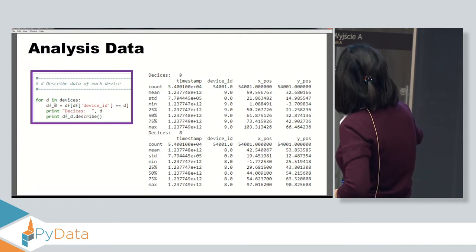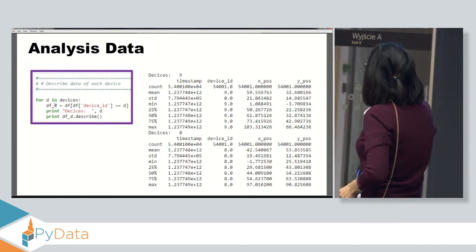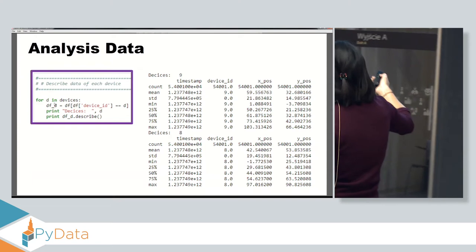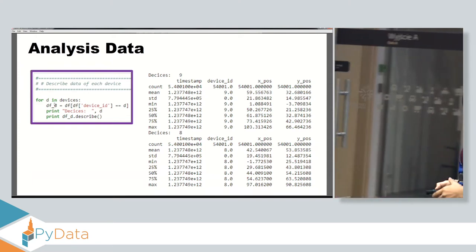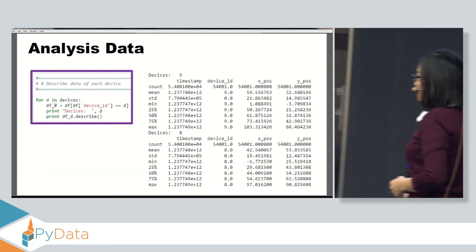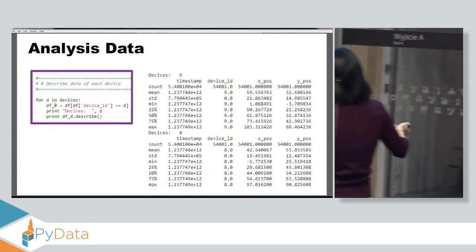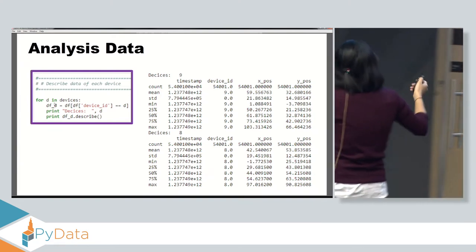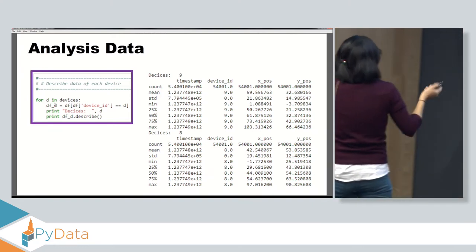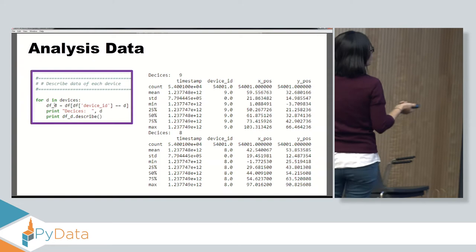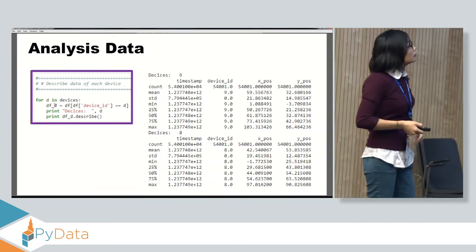We can also use DataFrame.describe() to get more statistical information about the data, including count, mean, standard deviation, min, max, and percentiles for X-port and Y-port of each device.